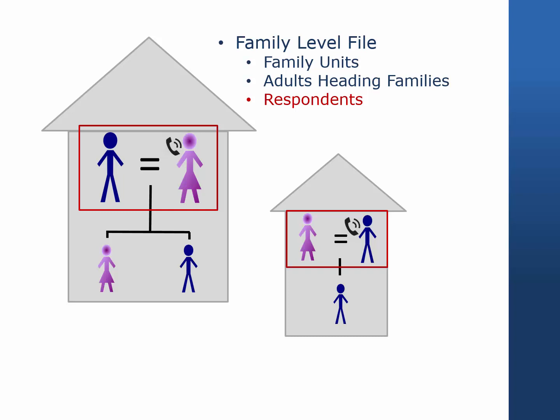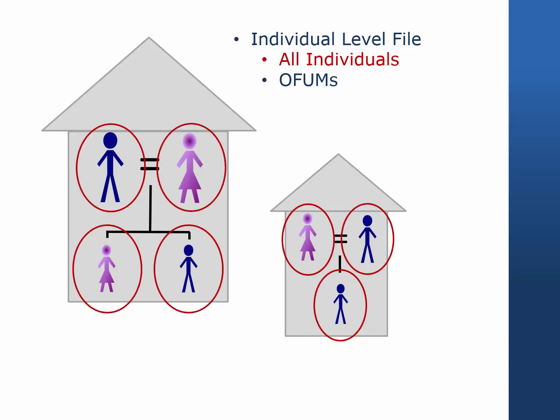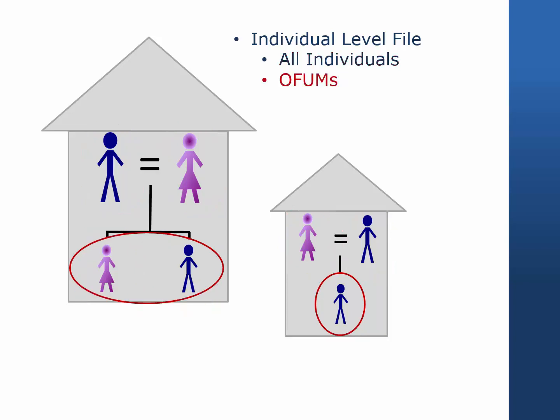The family files are available for each wave of the PSID. The individual-level file is a cumulative file that contains information from each wave of the PSID. Two basic types of variables are available: information collected for all individuals in the family unit, and rarely, information collected for just the adult family members besides the head or reference person and spouse or partner, also known as OFIMs.